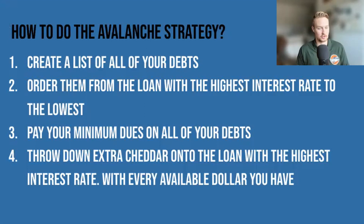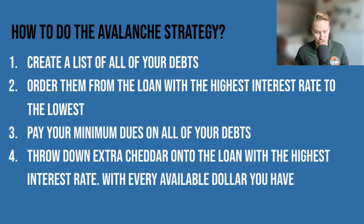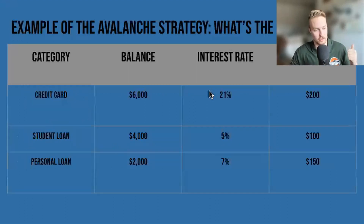Fourth, after you've paid your minimum on all those different types of debts, you're going to throw the extra money you have onto the loan with the highest interest rate. With every dollar you have available, toss that onto the loan with the highest interest rate — you've got to pay extra on that one. You're reducing the amount you owe at that insanely high rate. Credit cards? Forget about it — those are between 18 and 24%. You're going to want to knock those high-interest-rate debts out quickly.